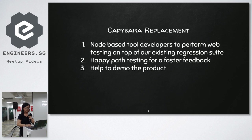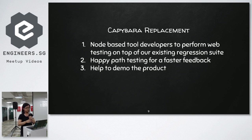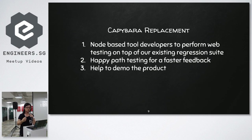My motivation was to find a Capybara replacement. Capybara is a tool we used in Rails — a gem for web testing. It's a bit old and based on QtWebkit, which is hard to install. That's why we wanted to replace it. The key motivation was to find a Node-based tool for web testing, on top of our existing regression suite, to create happy path testing for faster feedback and to demo products to users.